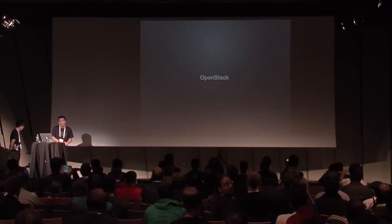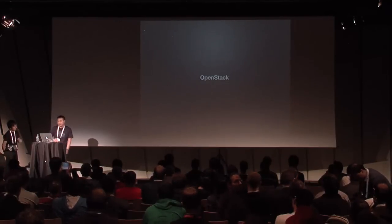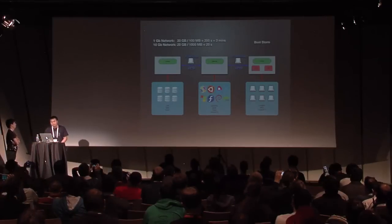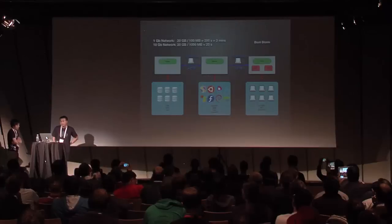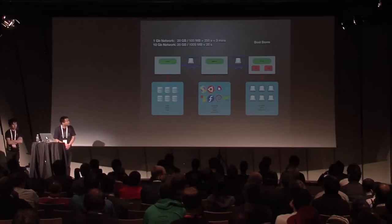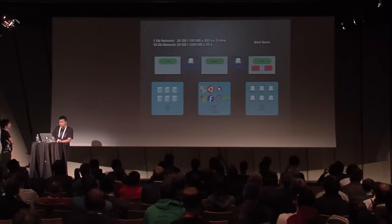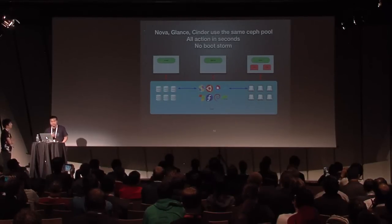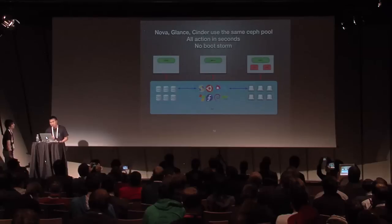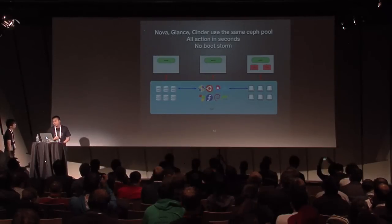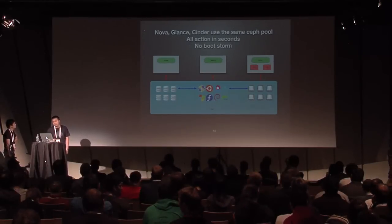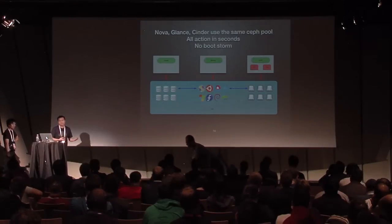Next we focus on OpenStack — how to integrate Ceph and OpenStack. The native OpenStack has two disadvantages: slow instance creation and large local store, because Nova compute needs to download the full image by HTTP. The optimization method is using the Ceph RBD pool. If we create a new instance, instead of Nova downloading the whole image by HTTP, the instance can directly read image data from Ceph by TCP. The instance only needs to read a small amount of data to boot, so it is very fast.